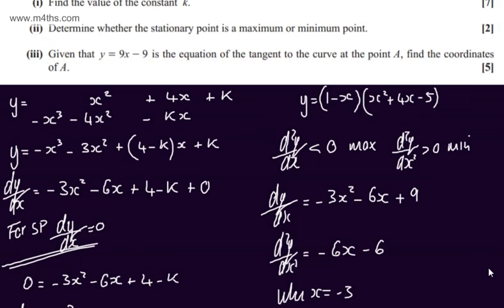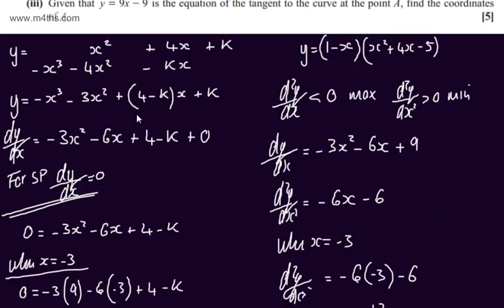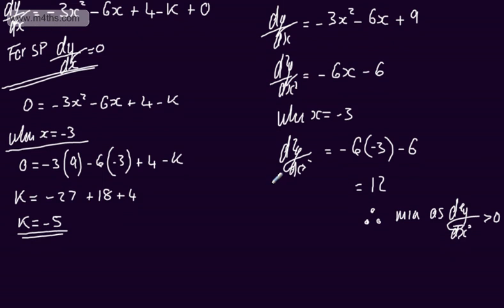In part 3, for 5 marks, given that y equals 9x minus 9 is the equation of the tangent to the curve at point A, find the coordinates of A. Looking at this line, we have a gradient of 9. This is the gradient function, and we can state that dy by dx, the gradient, is equal to 9 at A.